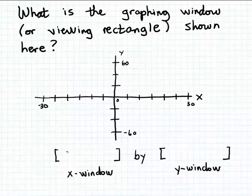The way we indicate an x-window is by simply writing down the minimum and maximum values that are included in our plot of the x-axis. In this example, the minimum value is easy to see, that's minus 30, and the maximum value is also easy to see, that's positive 30.